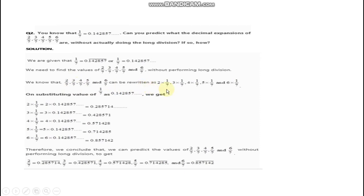We know that 2 upon 7, 3 upon 7, 4 upon 7 and so on can be written as 2 multiplied by 1 upon 7, then 3 multiplied by 1 upon 7, 4 multiplied by 1 upon 7, 5 multiplied by 1 upon 7, and 6 multiplied by 1 upon 7. Since the value of 1 upon 7 is already given, on substituting the value of 1 upon 7 as 0.142857 we get our answers.